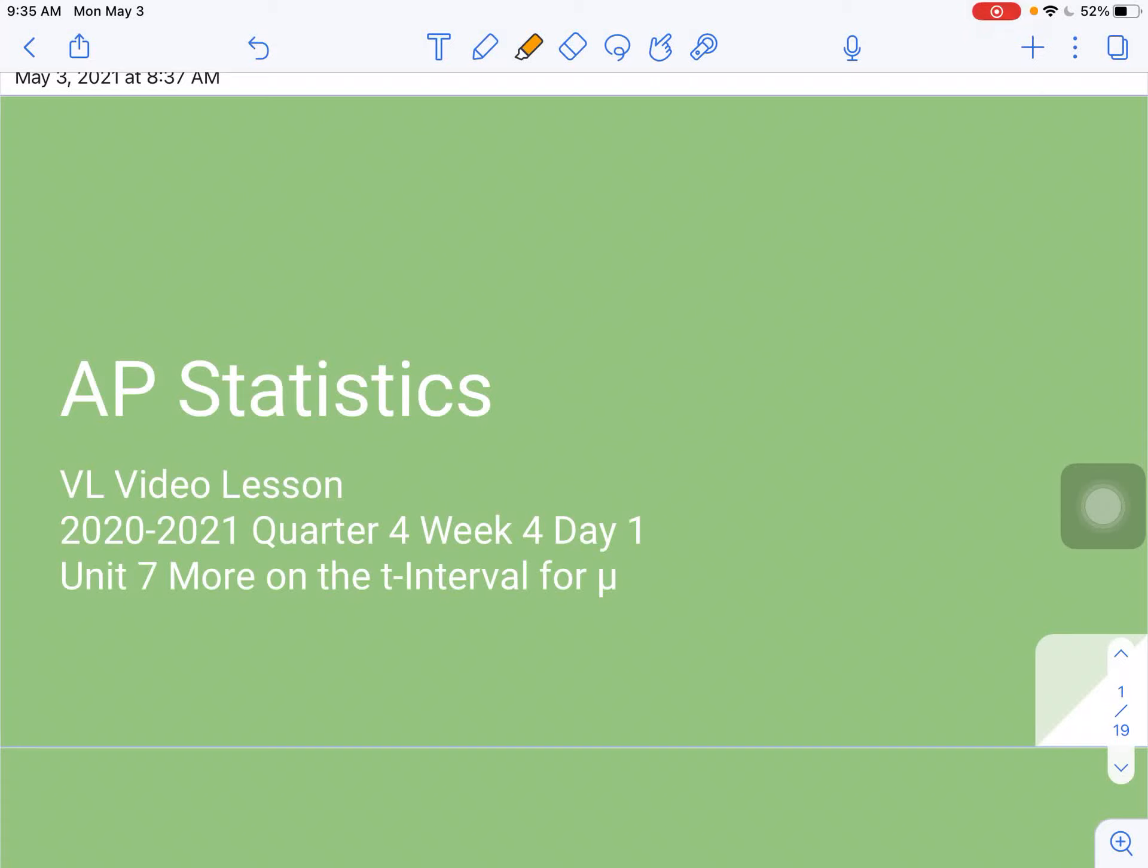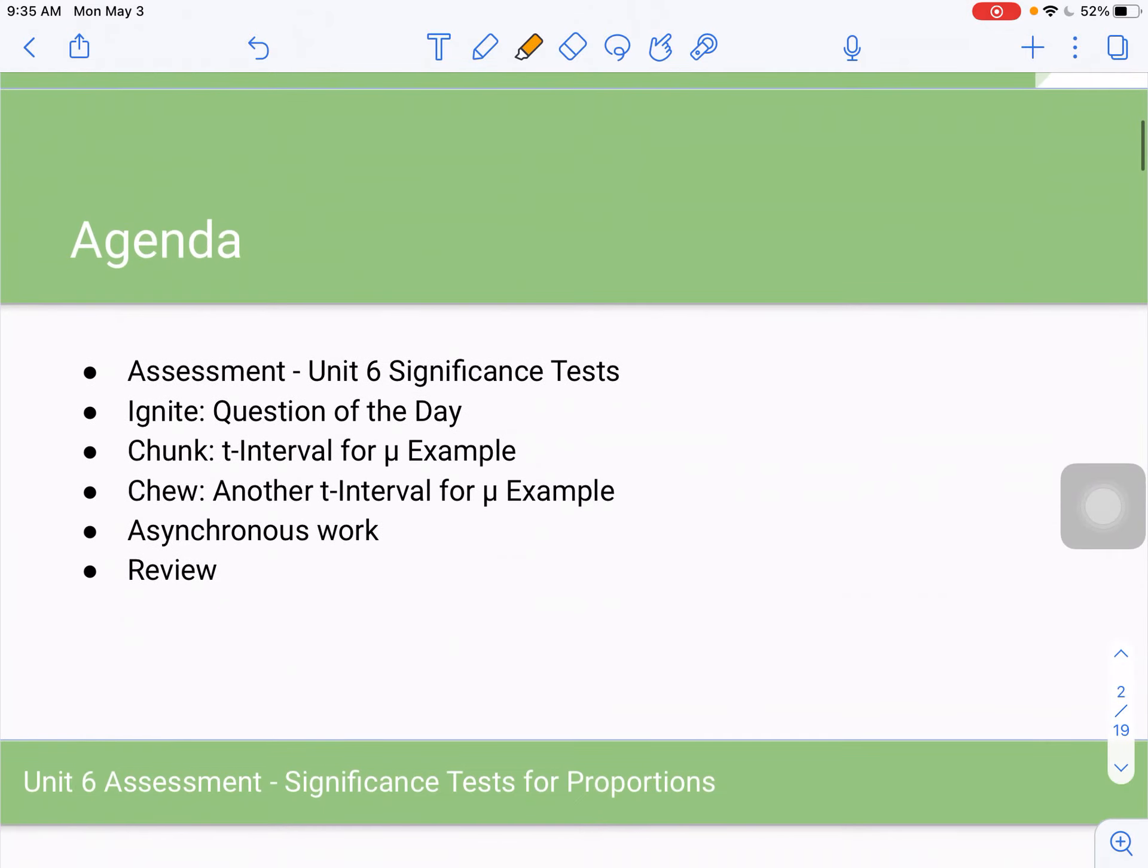All right, what's up VLAP statistics students, this is Mr. Bachman here, and this is your week four, day one lesson, unit seven, and we are going to continue talking about the T interval for mu. I started this topic in the week three, day two video, so this will kind of run through that process. All right, so the agenda for today, I'll just quickly remind you about the unit six assessment that will be due on Friday. We will have an Ignite, I'll run through a T interval for mu example, and then I'll give you a little chance to work on another example.